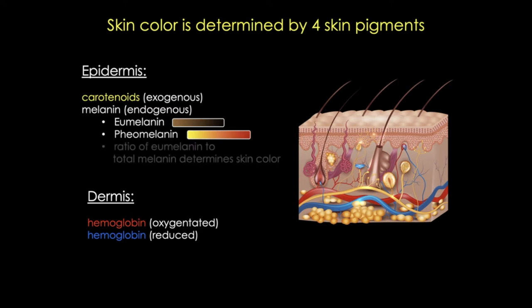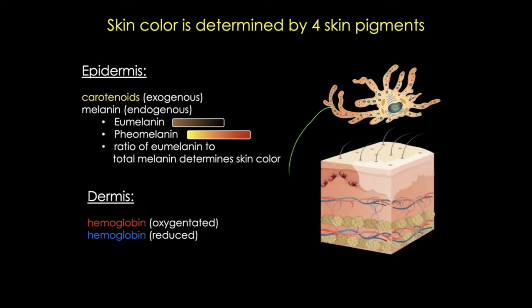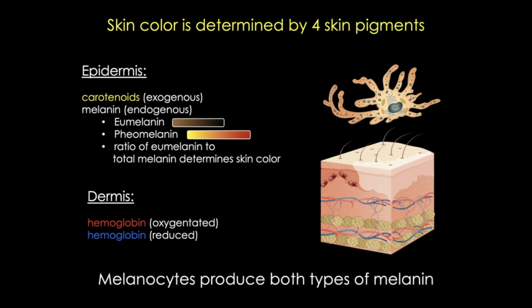Importantly, it's really the ratio of these two types of melanin that determines skin color. Epidermal melanins are produced by a specialized cell called the melanocyte. These are predominantly located in the stratum basale, or the basal cell layer, and they produce both kinds of melanin.